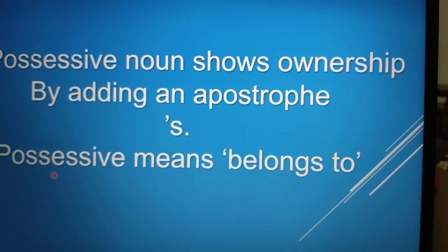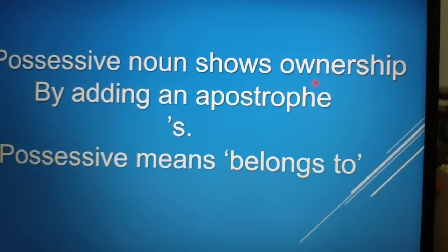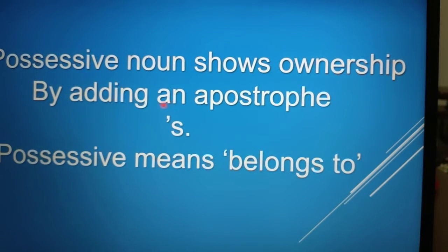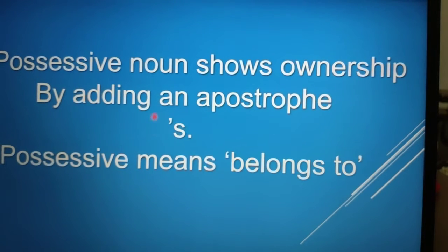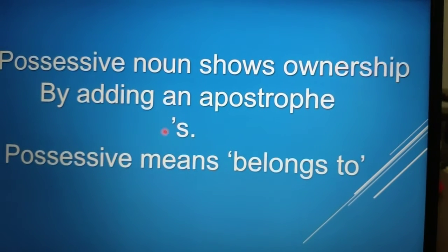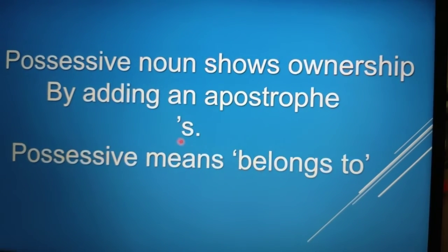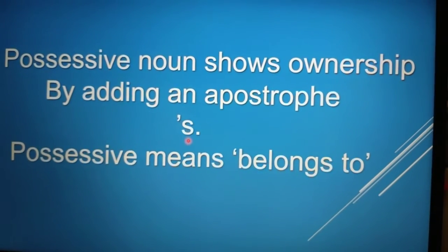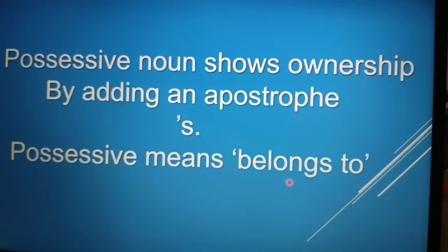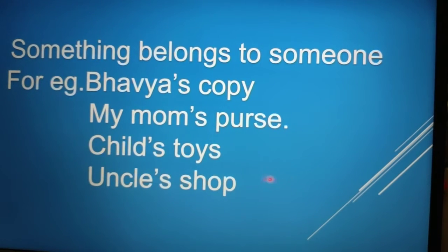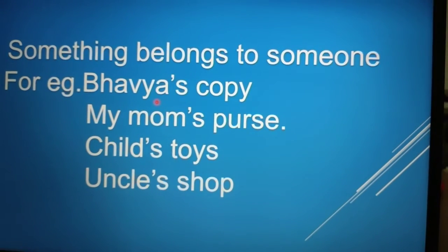So what is a possessive noun? A possessive noun shows ownership by adding an apostrophe. Apostrophe means this comma — the comma I am showing you with the help of the laser pointer. This comma shows possessive. Possessive means 'belongs to' — to whom the thing belongs. Means something belongs to someone. So now take the examples.